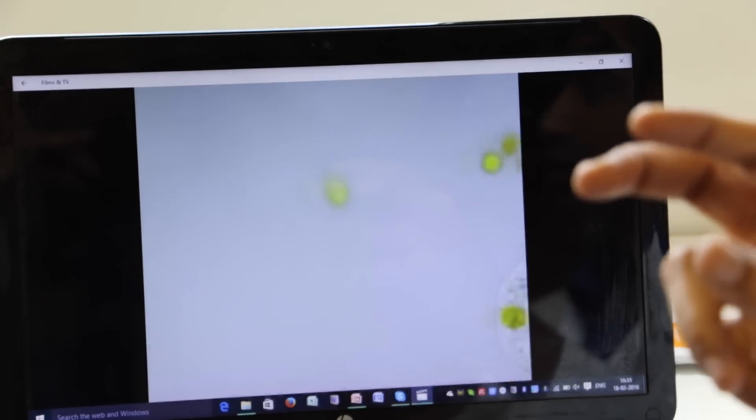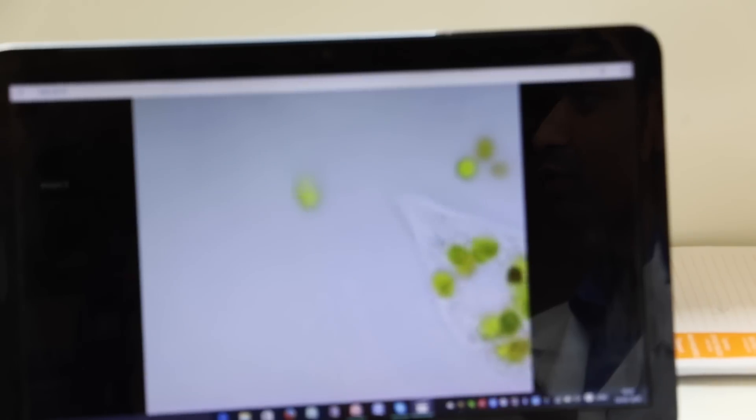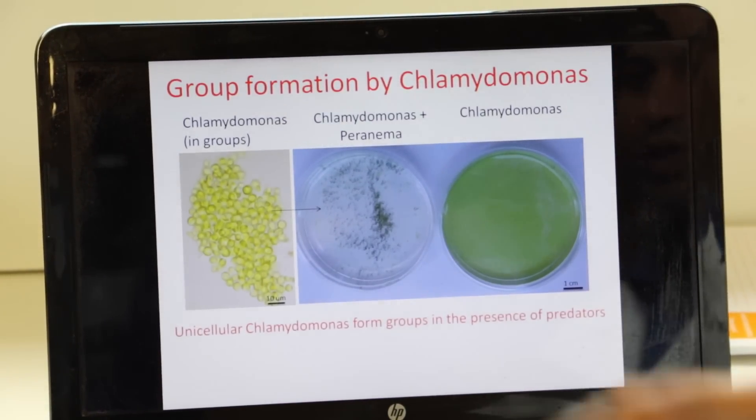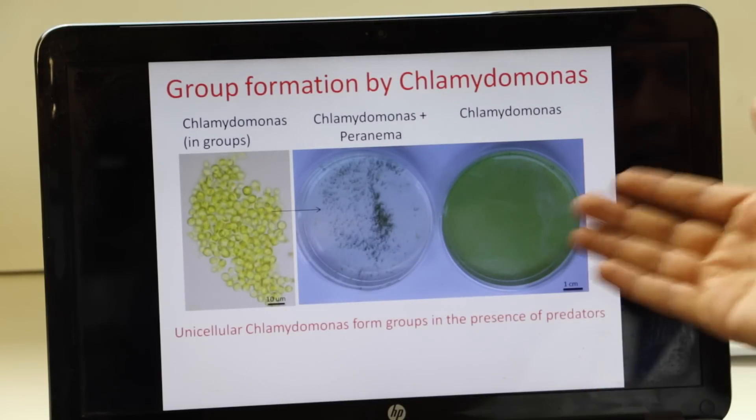They can do that by either coming together or when cells divide, if they do not separate, the daughter cells do not separate, they can form a large group. Such large groups can protect themselves from predators.